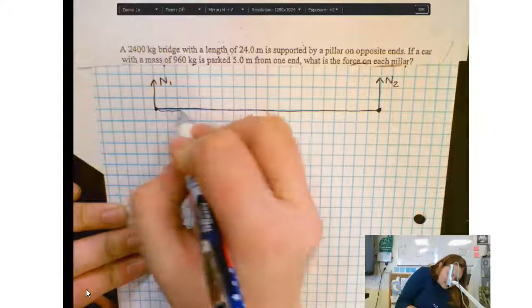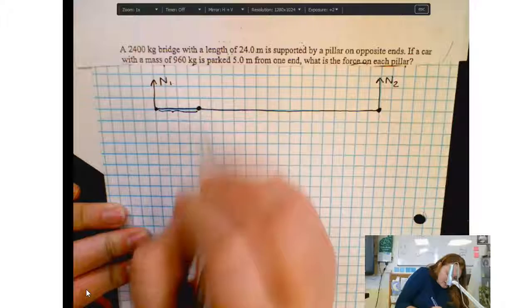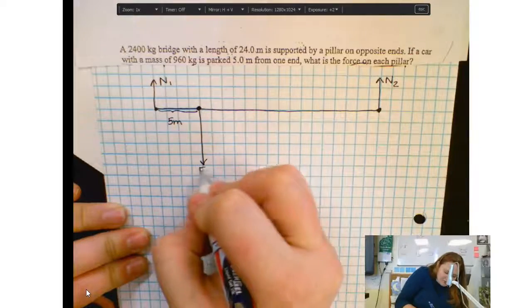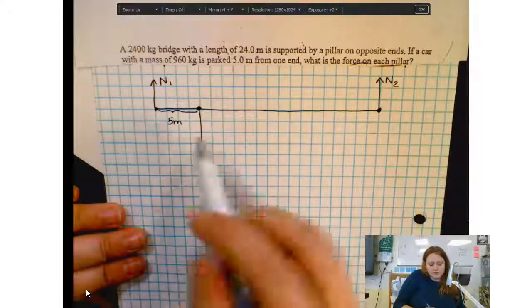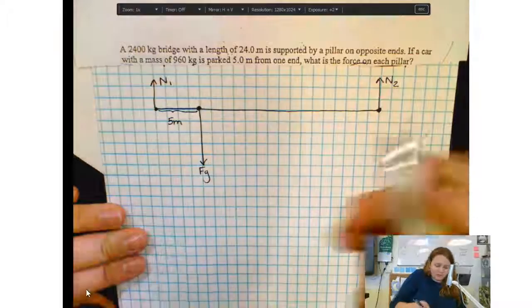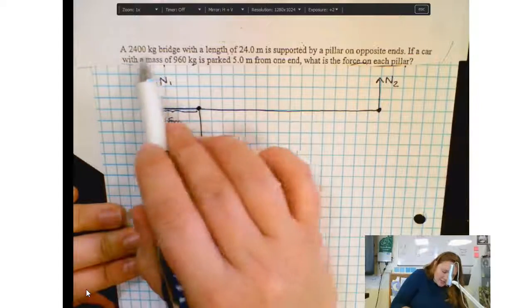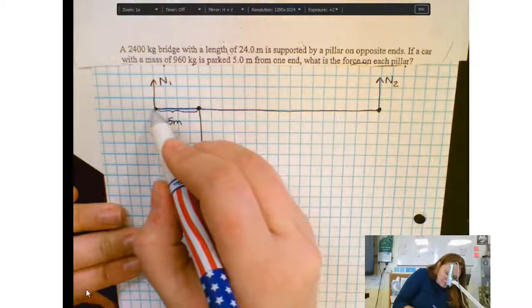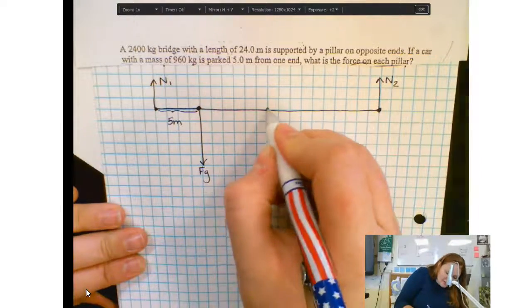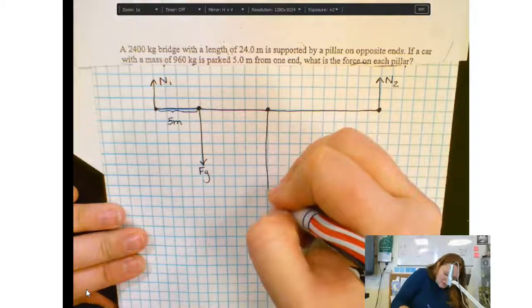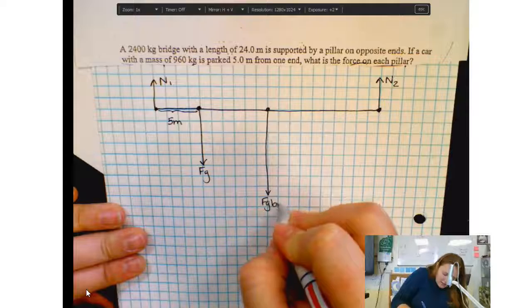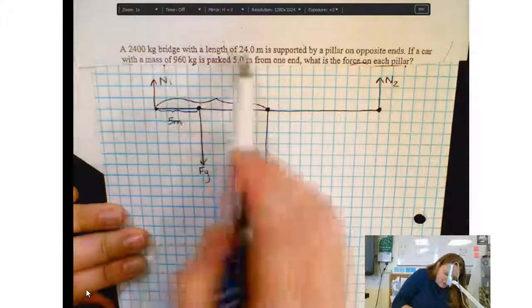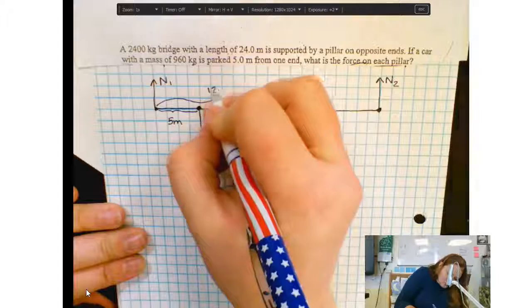First of all, there is a 960 kilogram car parked 5 meters from the left end. So there's going to be a force of gravity closer to this pillar, which means that pillar is going to have to support more of the weight. Now, the bridge itself has mass, so it's going to have a force of gravity located at its center of mass. Because the bridge is uniform, then the center of mass is going to be right in the middle. And that's going to be a distance of 24 meters divided by 2, which is 12 meters.